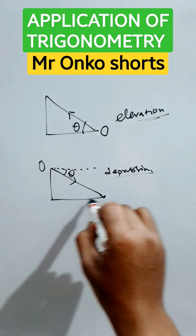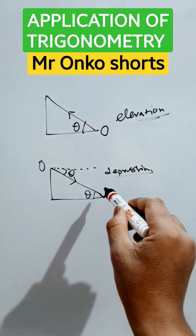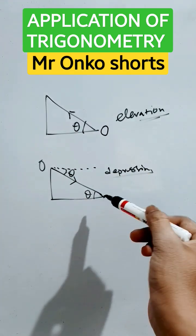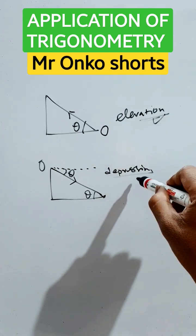Now, since this line is parallel to this line, this angle will be equal to this angle. It's the property of the Z angle, that is alternate interior angles. This is elevation, this is depression. That's it.